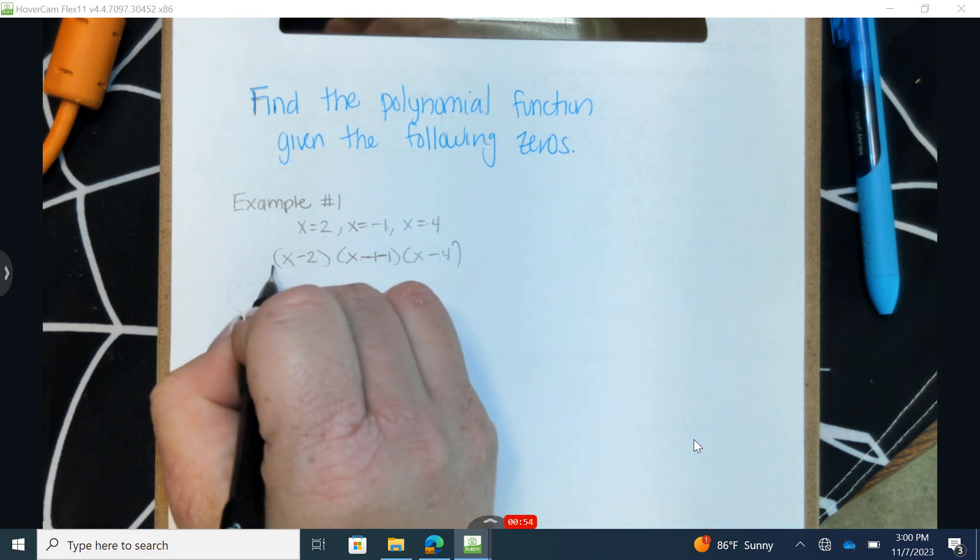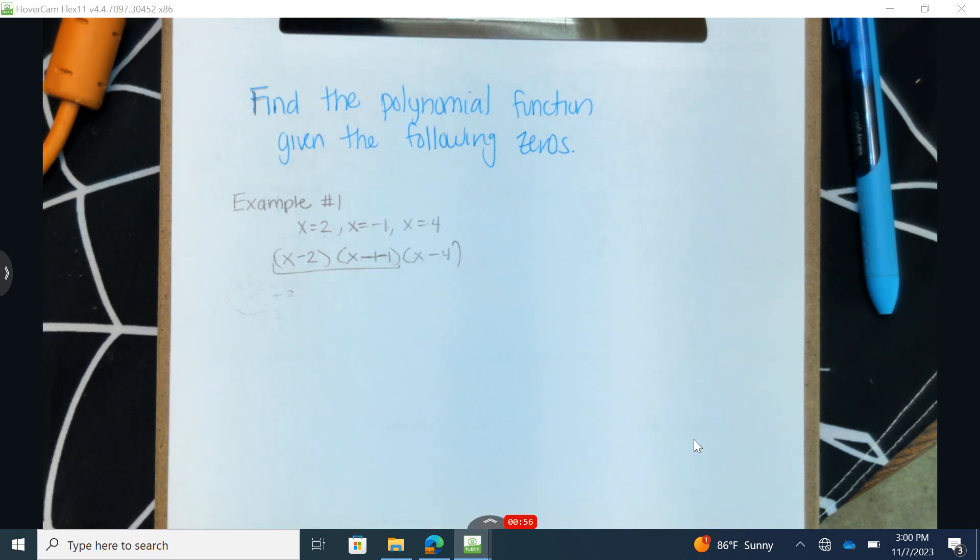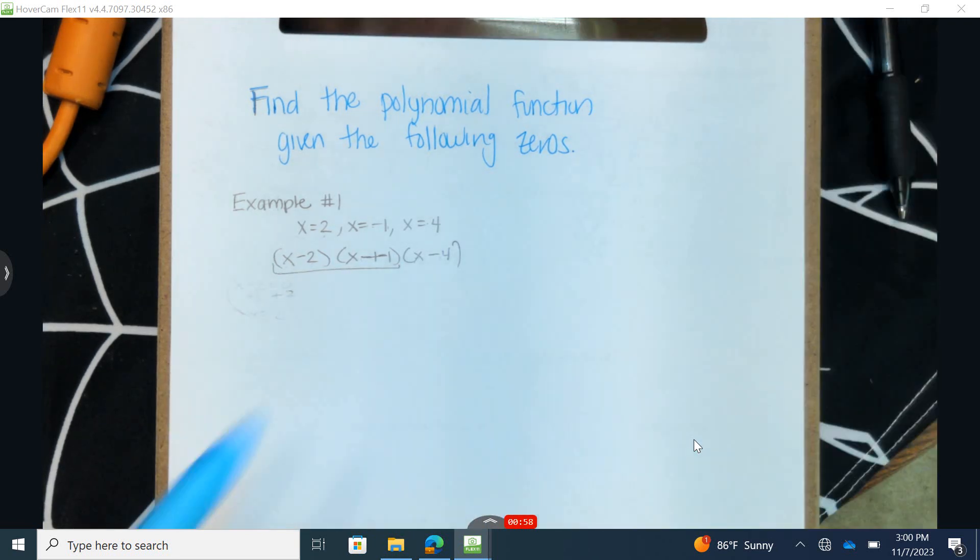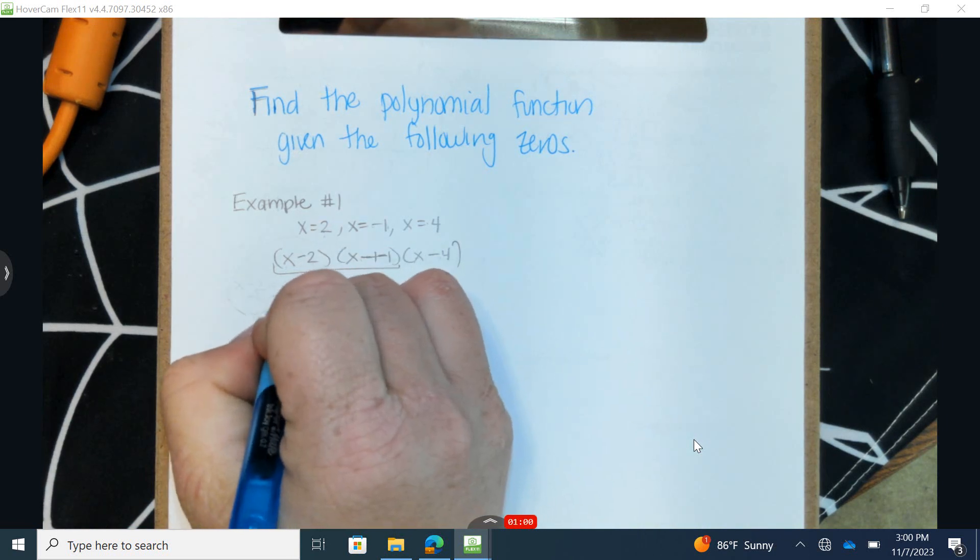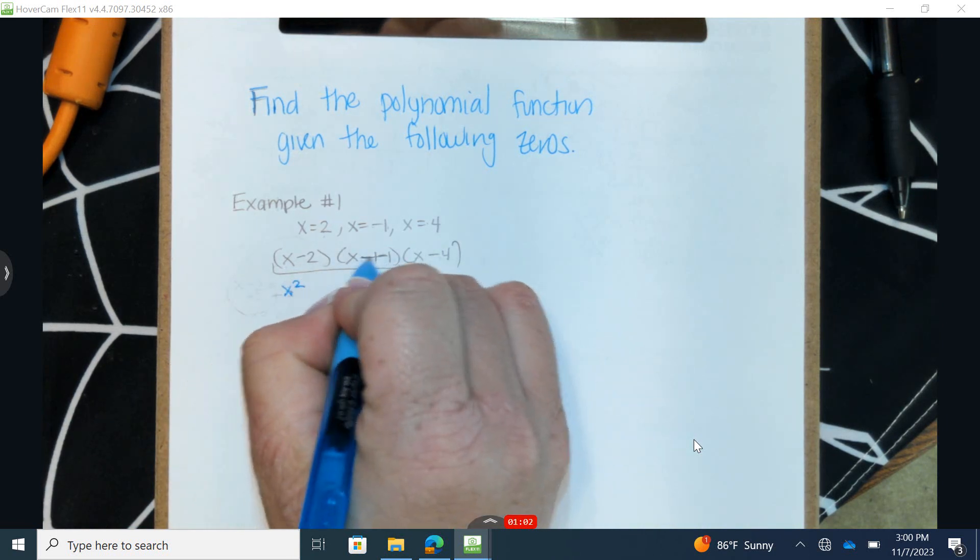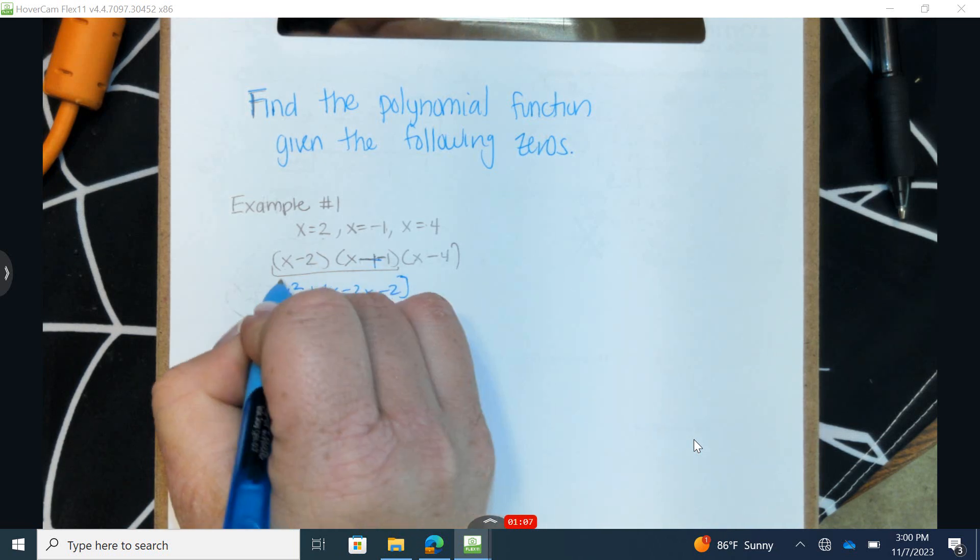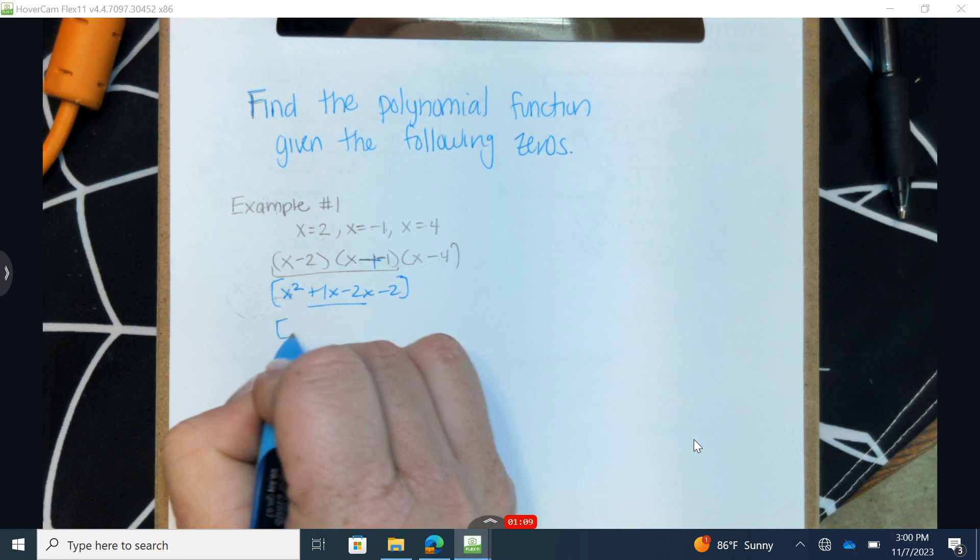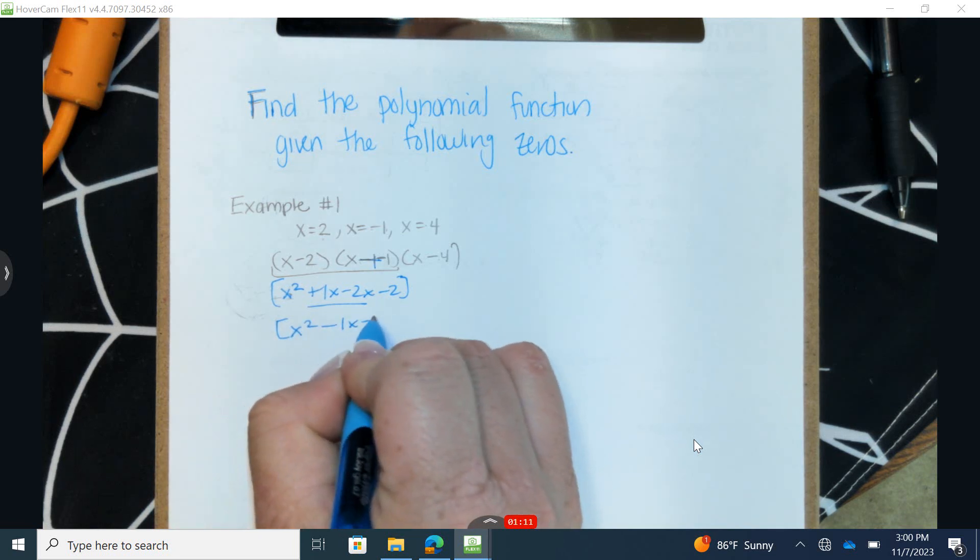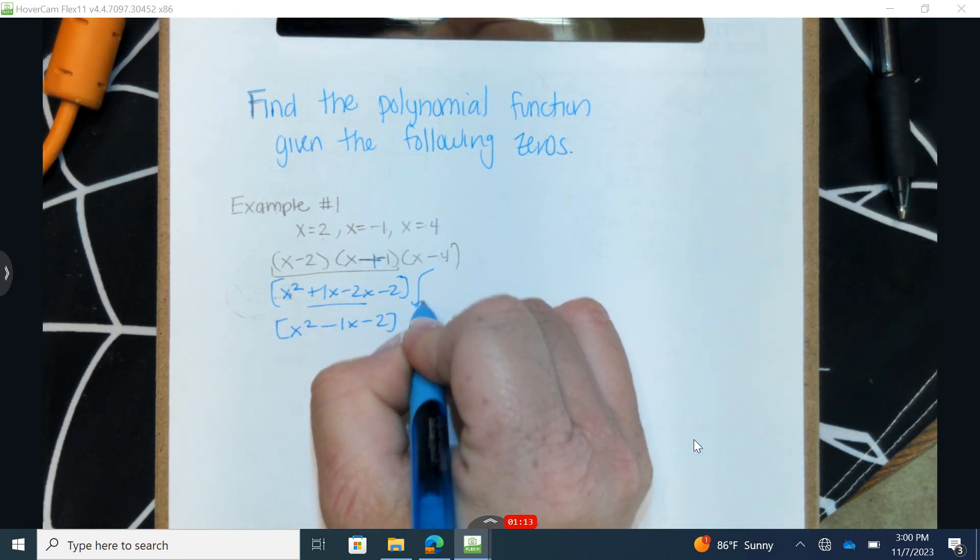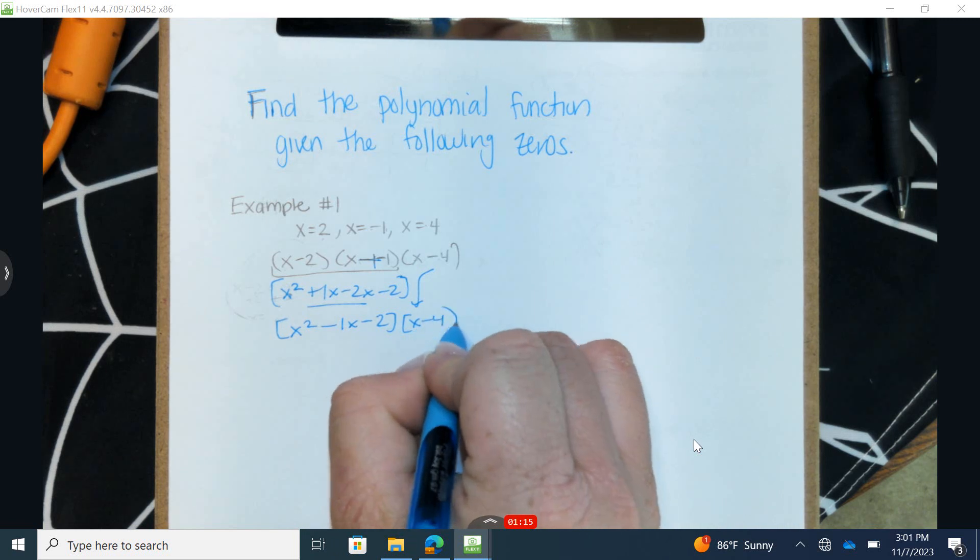Alright, so now I'm going to FOIL this—front, outside, inside, last. So multiplying the fronts, remember this is a positive, multiplying the outsides, the insides, and the last. And then I'm going to combine like terms of the two terms in the middle to get x squared minus 1x minus 2. I'm going to bring down the last and final factor.